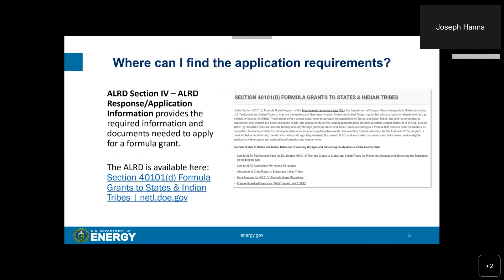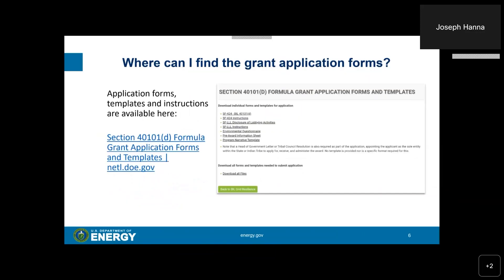The application requirements are found in ALRD Section 4, Response Application Information. It provides the required information and documents needed to apply for a formula grant. We have placed all this information on the website accessed by the link below. The application forms are also available from that same website.